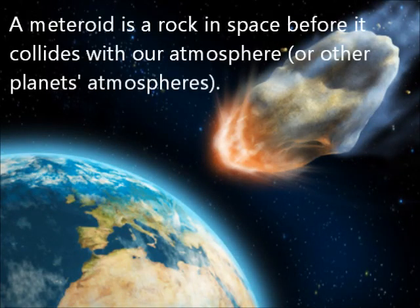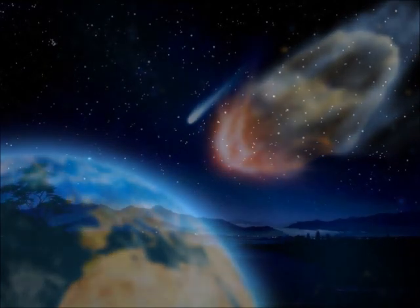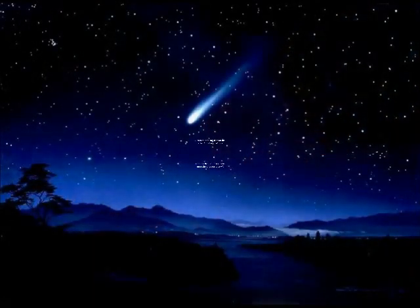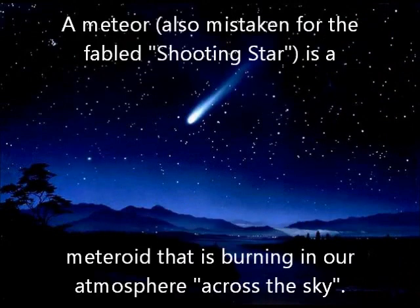A meteoroid is a rock in space before it enters the atmosphere or other planets' atmosphere. A meteor, also mistaken for the fabled shooting star, is a meteoroid that is burning in our atmosphere across the sky.